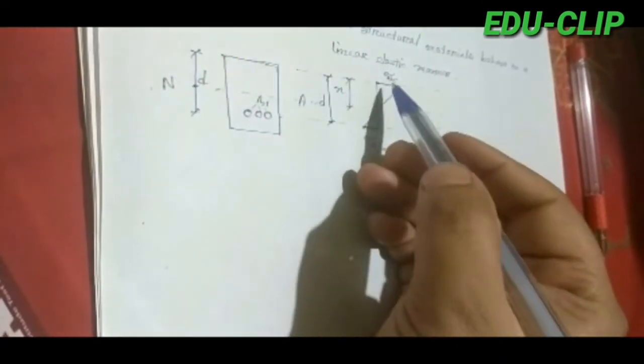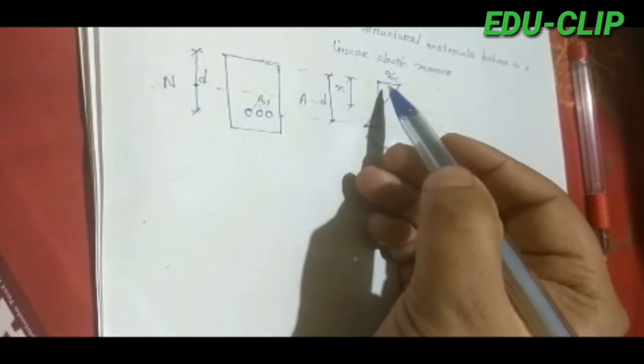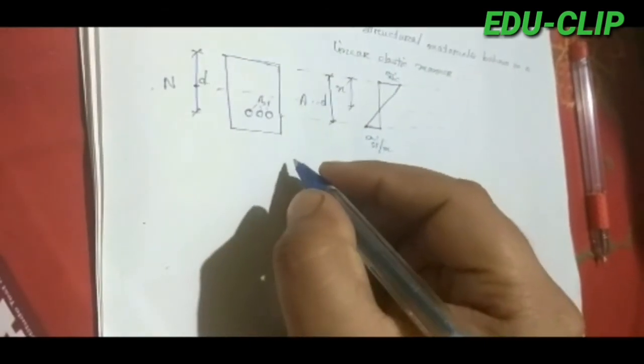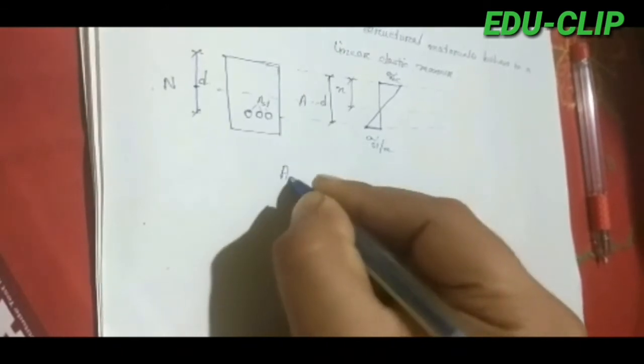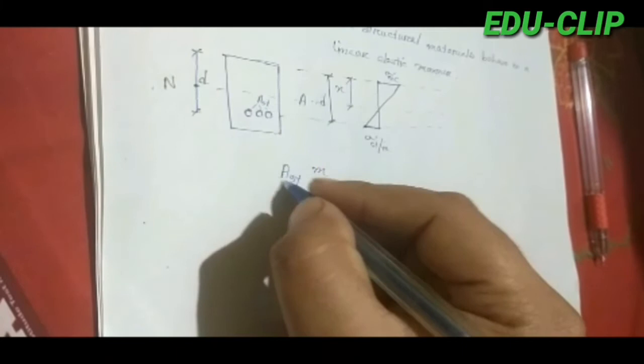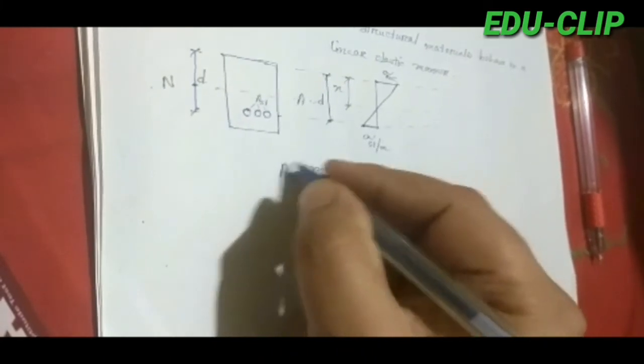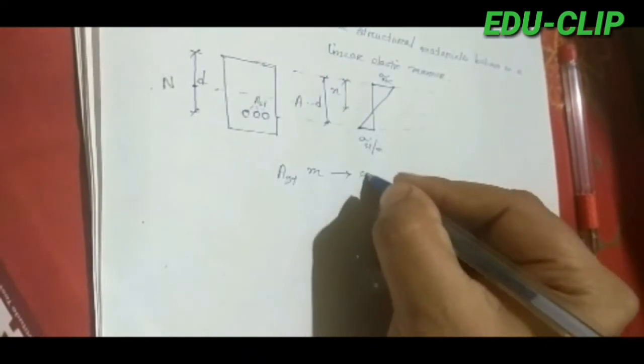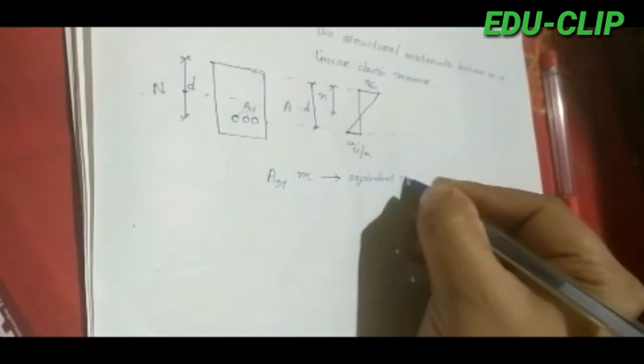On the tensile side, the stress is sigma_st. This tensile area is converted into an equivalent concrete area by multiplying by the modular ratio m. So if we multiply the modular ratio m into A_st, that means area of the steel reinforcement, we get the equivalent concrete area.